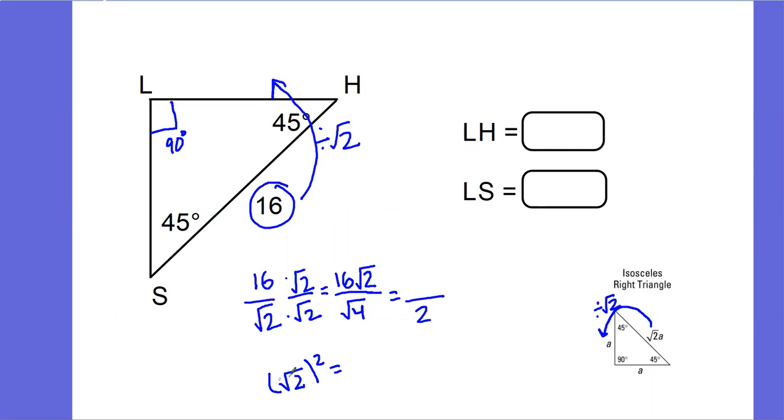The square root of 4 is 2. And because squaring and square rooting are inverse or opposite operations, all I'm left with is this 2 that's under here. So now I have 16 root 2 over 2. If you can simplify, you want to simplify.